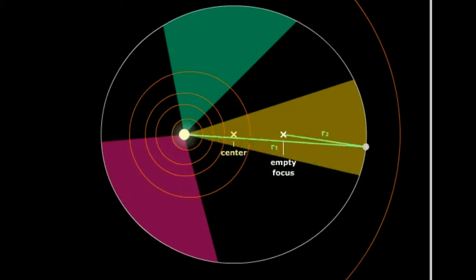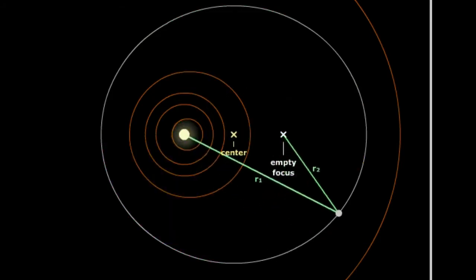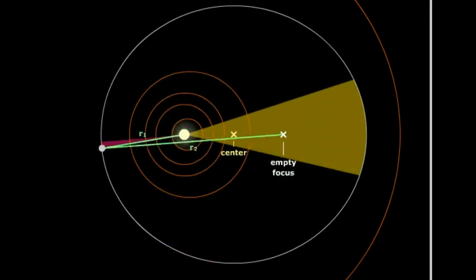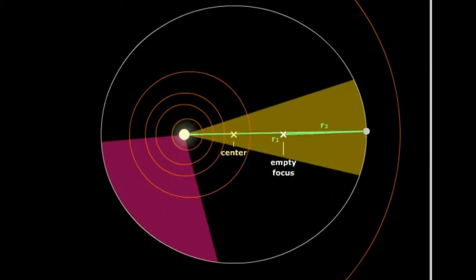So this is Kepler's second law. Again, we see a certain amount of time there cutting out an area. The same amount of time, same area. Same amount of time, same area.